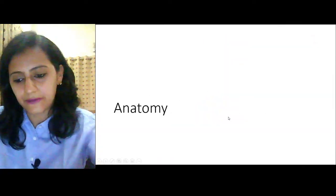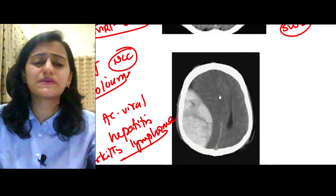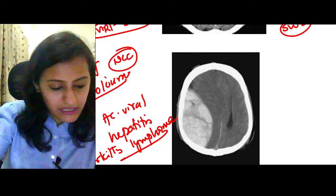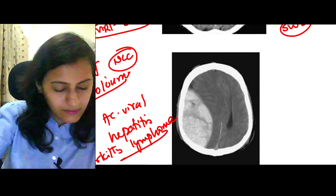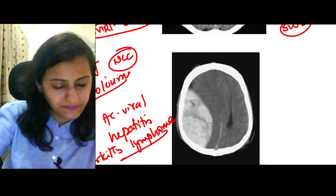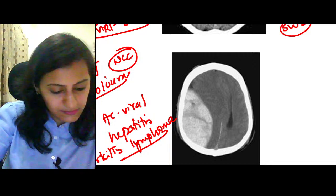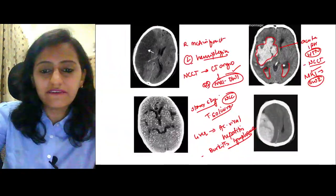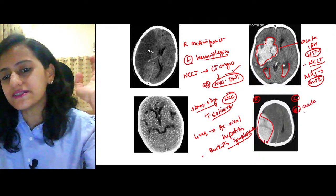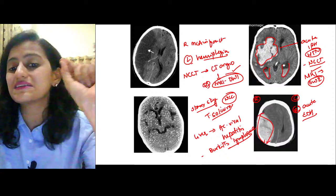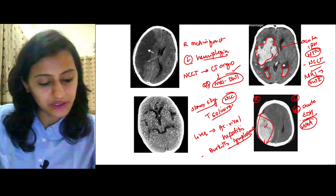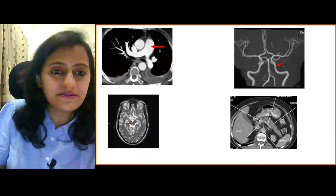In neuroradiology, one image on hemorrhage — be it EDH, SDH, or SAH — is almost always asked. Make sure you know all of them. This image shows right-sided acute EDH: biconvex shape, does not cross sutures, hyperdense — due to rupture of the middle meningeal artery.